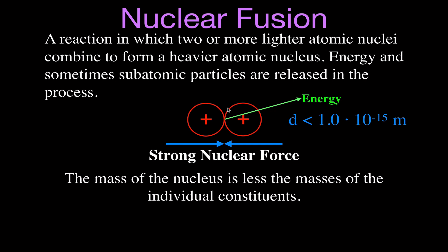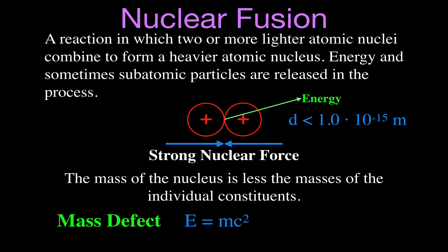If we take the mass of the individual protons before fusion and compare it to the mass of the combined nucleus, we find the combined mass is less than the mass of those two individual protons. That mass difference we call the mass defect — some mass that is 'missing,' which has been converted into energy. There is an energy equivalent through Einstein's equation, E = mc². We call that energy the binding energy. So the mass defect and the binding energy are really the same thing, just expressed in different units.